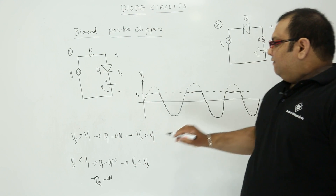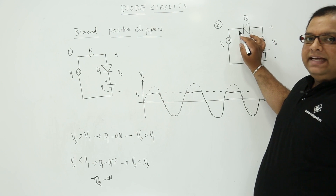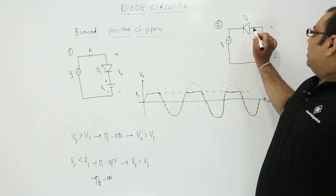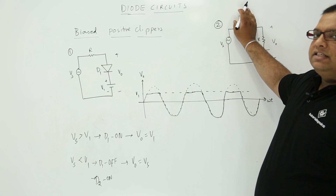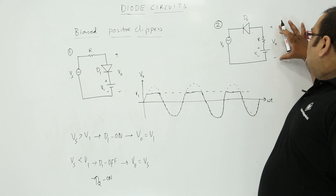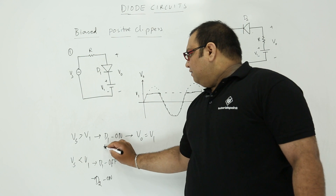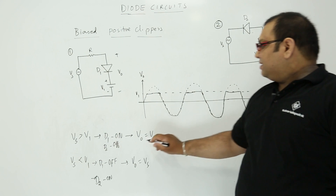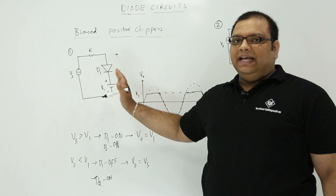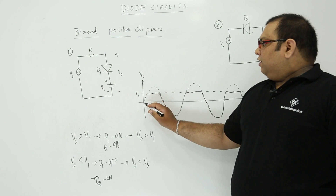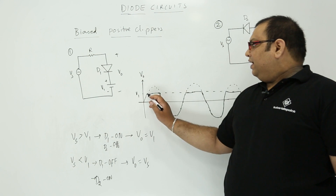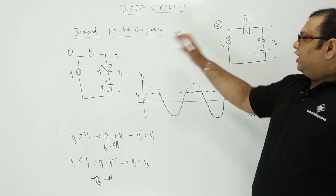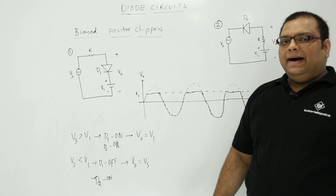Now let us take the other condition when Vs is greater than V1. Here we have V1 at the positive side, but Vs is more than V1. This is reverse bias because we have less voltage on one side and more on the other. When the diode is reverse biased, it is open circuit, and the output voltage is same as V1. So when D2 is in off condition, output voltage is same as V1. Both circuits give the same output waveform. When Vs is greater than V1 it is clipped to V1, and when less than V1 it follows the input. We call these biased positive clipper circuits.